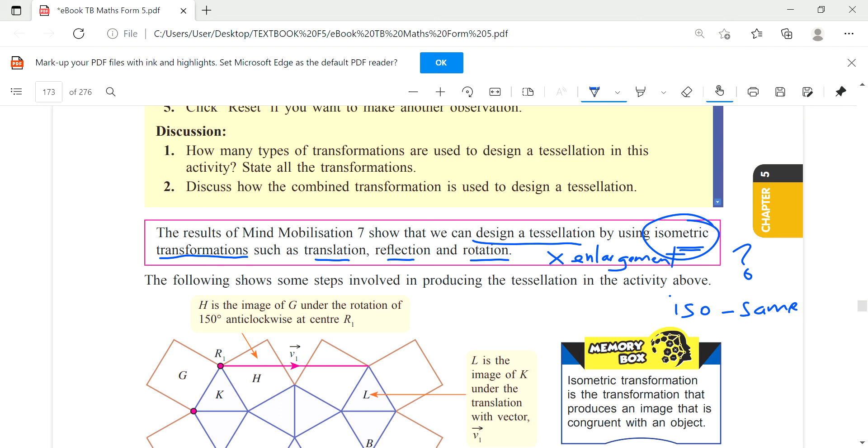Why? If you look carefully here, all these three transformations - the shape is the same. It doesn't change the shape, the size of the shape. The orientation will change but the size will not change. So translation, reflection and rotation will not change size, so tessellation is actually related to isometric transformation.